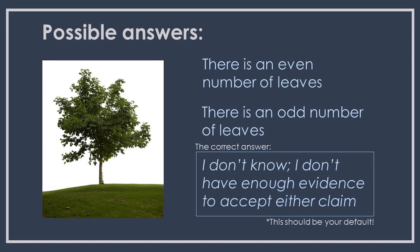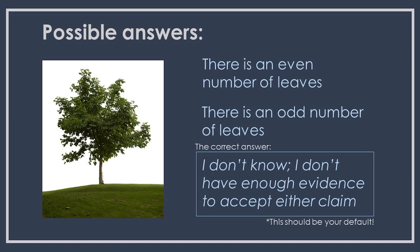If you tell me you don't believe my claim that there are an even number of leaves, what are you saying? Are you saying that there are actually an odd number of leaves? No, of course not. You're not asserting that there are an odd number — that would be a totally different claim. The correct answer is that you don't know whether there are an even or odd number of leaves, because you don't have enough evidence to accept either claim. The time to believe a claim is when there's sufficient evidence to believe it. So 'I don't know' should be your default response.